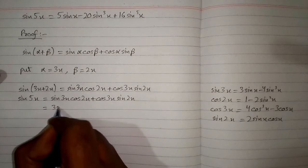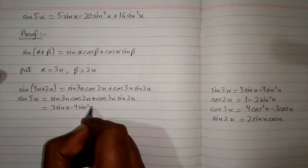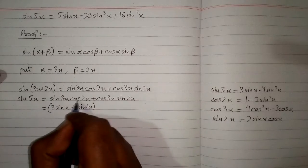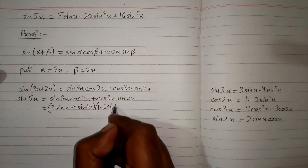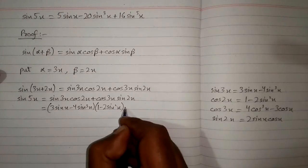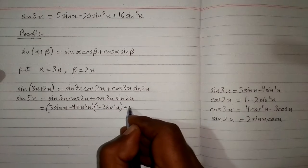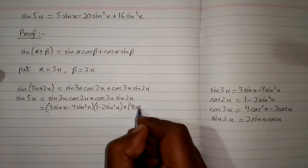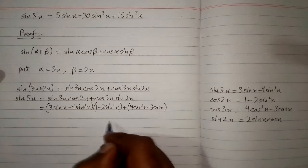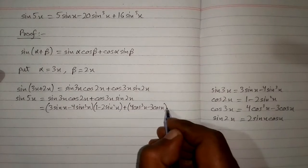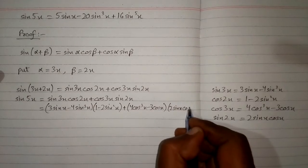We will use these identities. In place of sine 3x we write 3 sine x minus 4 sine cubed x, and in place of cos 2x we write 1 minus 2 sine squared x. Then plus, in place of cos 3x we write 4 cos cubed x minus 3 cos x, and in place of sine 2x we write 2 sine x cos x.